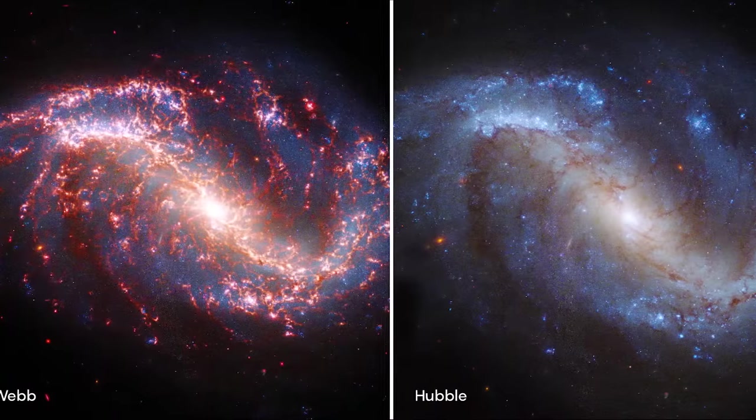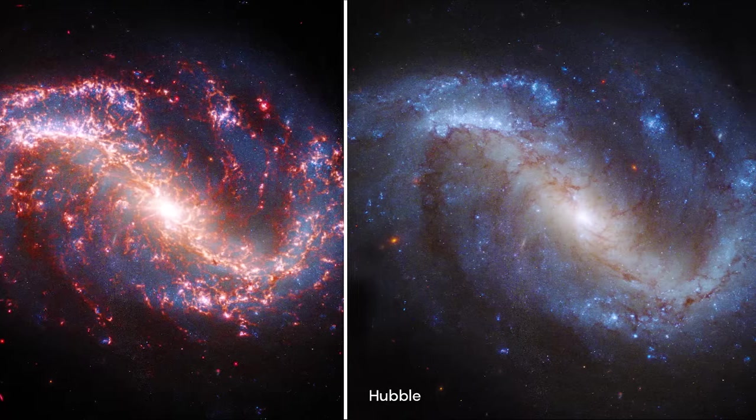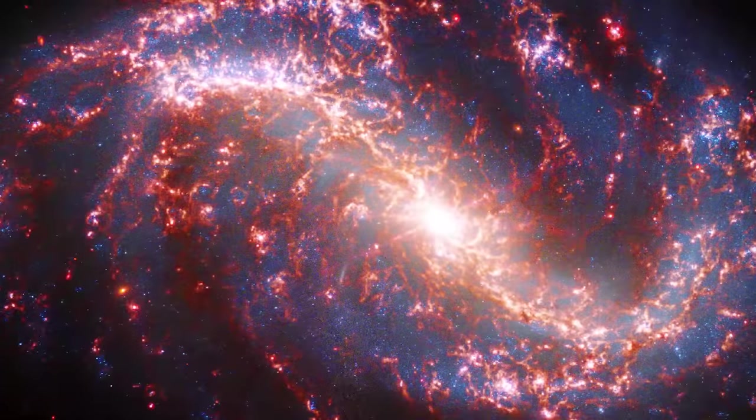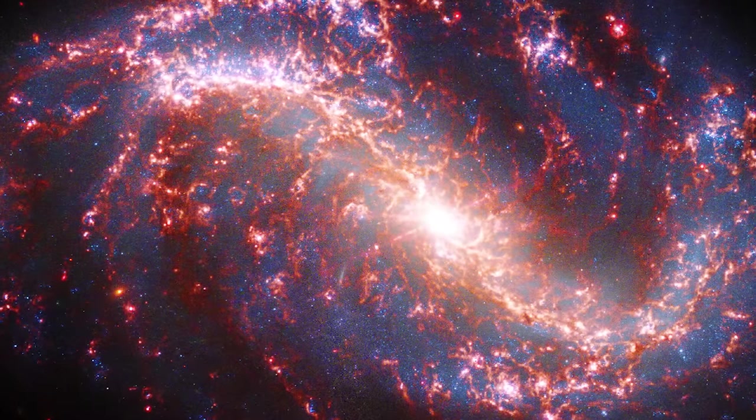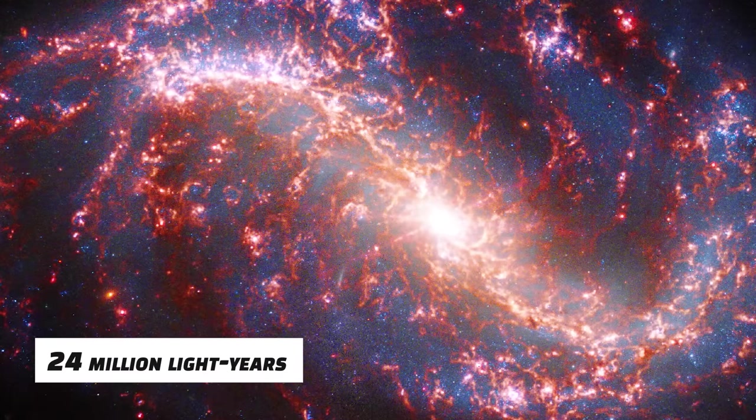Hubble was unable to detect riveting parts of star formation in the galaxy NGC 7496, but the James Webb Space Telescope can. Moreover, this galaxy is around 24 million light-years away.